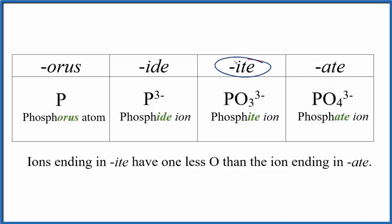So when we see I-T-E and A-T-E at the end of a name, that means it's a polyatomic ion. It'll be more than one atom bonded together. The best way to do this is just to remember phosphate.